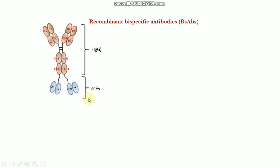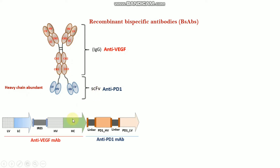Next, the recombinant bispecific antibody in more detail. Here is the ScFb. ScFb can be joined either in the heavy chain part or in the light chain part. If we assume the IgG sequence is the anti-VEGF sequence, and this ScFb is the anti-PD-1 sequence, these two sequences then join together to form this kind of antibody. Basically, this is the heavy chain appended format because the ScFb is joined in the heavy chain constant part. Finally, we get the anti-VEGF sequence joined by a linker with the anti-PD-1 monoclonal antibody sequence.